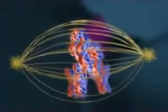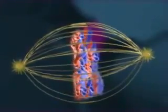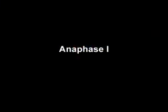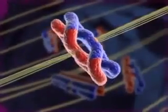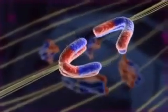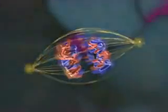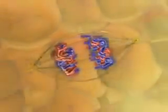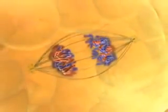At metaphase I, the chromosome pairs are positioned in the middle of the cell. The next stage begins when homologous chromosomes separate from each other and move toward opposite poles. Each chromosome still consists of two sister chromatids.